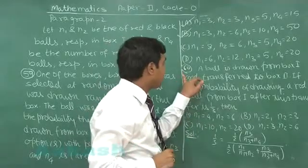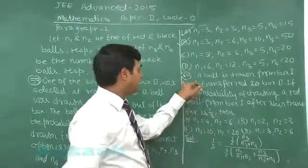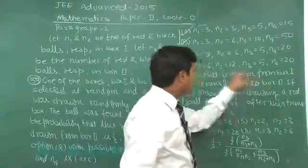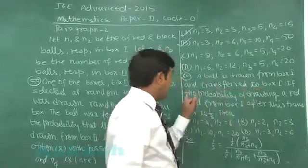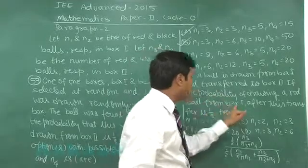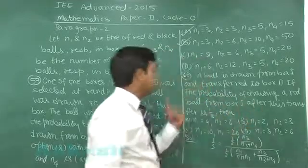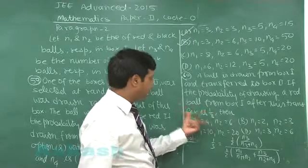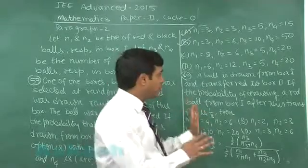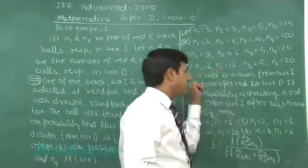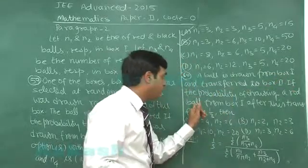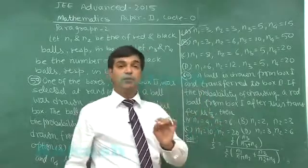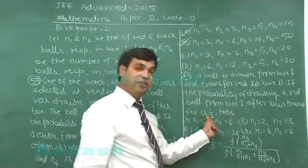Now let us go for last question, that is question number 60. A ball is drawn from box 1 and transferred to box 2. If the probability of drawing a red ball from box 1 after this transfer is 1 by 3, then - so what we did? We took a ball from box 1 and transferred to box 2, and then now we are drawing a ball from box 1 after this transfer. The probability of getting a red ball is 1 by 3.